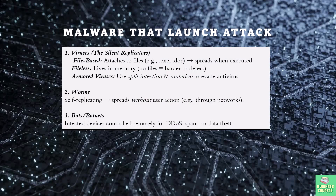Some malware doesn't just harm your computer — it turns it into a weapon to attack others. The first type in this launch malware family is viruses. Viruses are like digital parasites. File-based viruses cling to documents or apps, waiting for you to open them. Have you ever heard of Melissa? It infected Word documents in the 90s, mailing itself to your contacts. Some viruses use polymorphic techniques to dodge antiviruses.